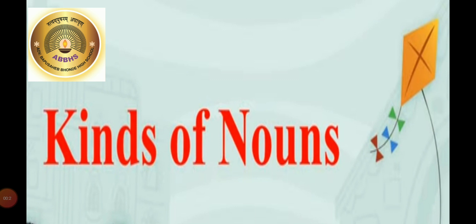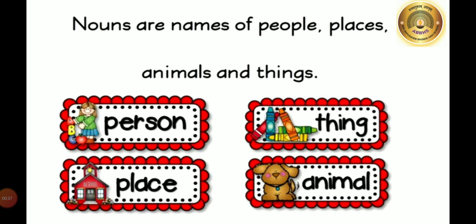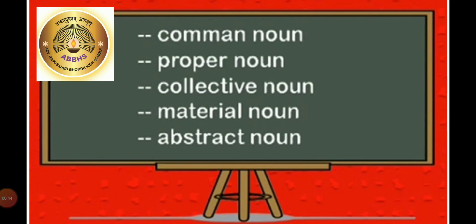Before starting our new topic, let's revise our previous knowledge about nouns. Nouns are names of people, places, animals and things. Students, in this topic there are 5 kinds of nouns which we are going to study today: Common Noun, Proper Noun, Collective Noun, Material Noun and Abstract Noun.